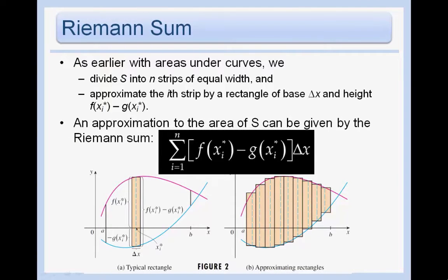In order to do this, we're going to go back and think of Riemann sums as a way of finding the area between two curves. We're going to divide up our area between the two curves into a bunch of different rectangles of equal width. The strips are going from x equals a to x equals b, and each strip has a width of delta x.